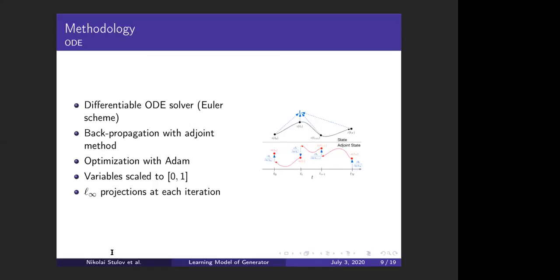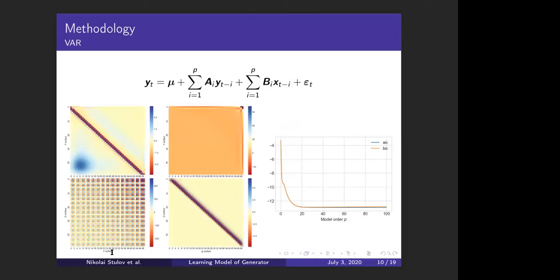Next on the list is vector autoregressive process. In general, autoregressive model is a proven tool in many stationary time series applications. Vector autoregressive process has one hyperparameter, it is p, its order, and we can see that it has exogenous inputs.